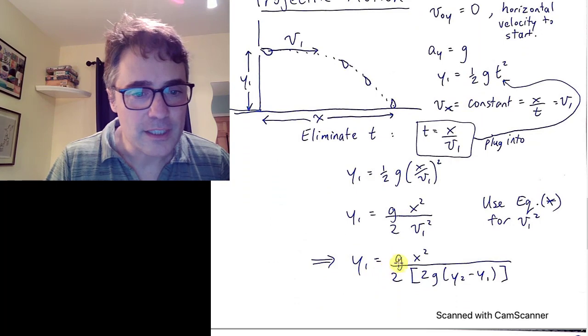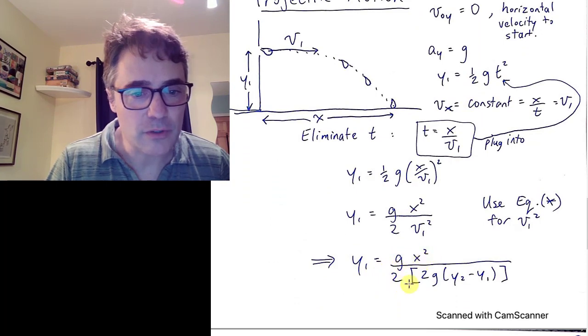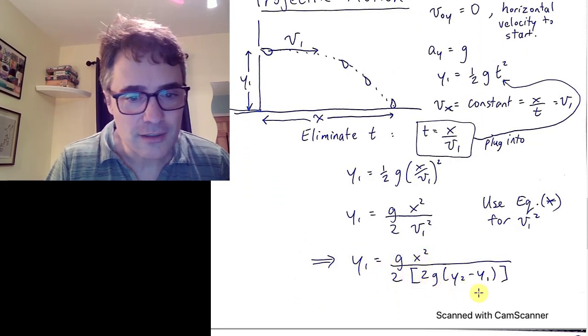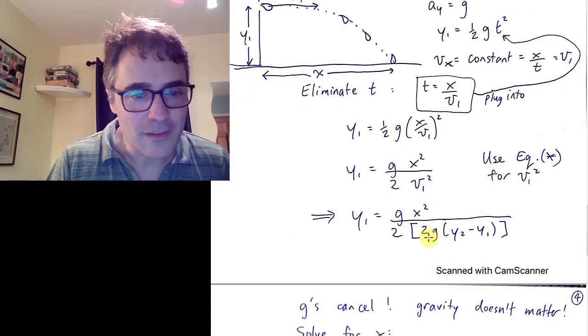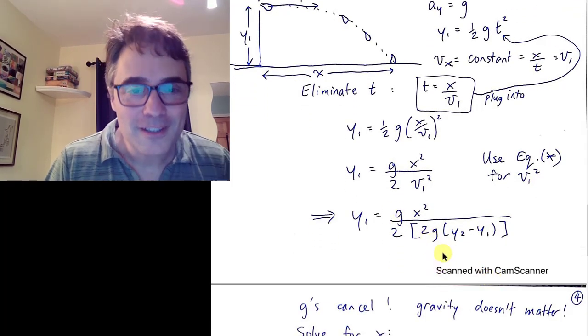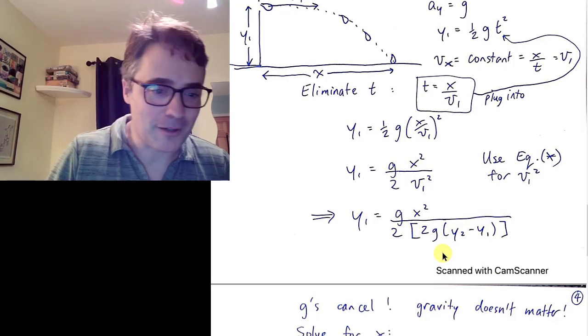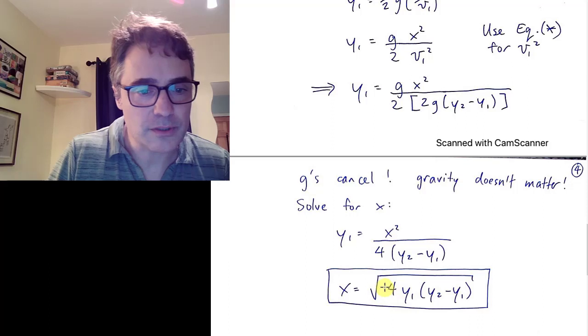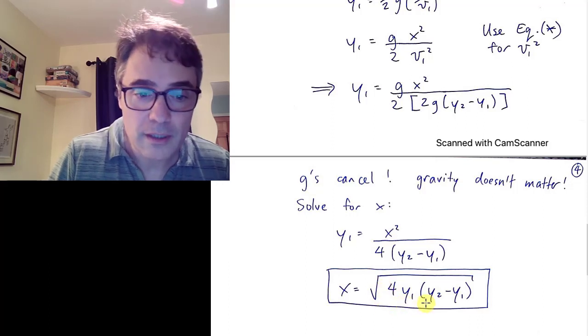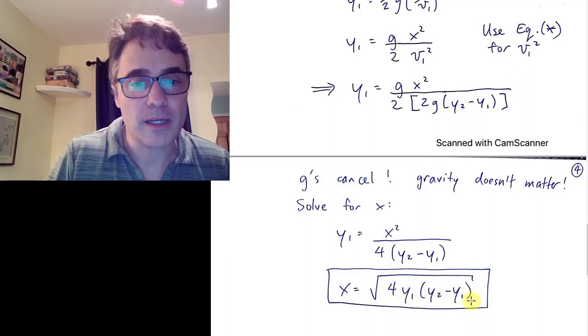What's interesting is that there's a G on the top and the bottom, they cancel. Somehow, gravity doesn't matter. We can solve out for X the range: X equals the square root of 4 times Y1 times Y2 minus Y1.